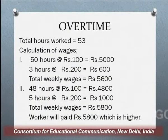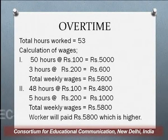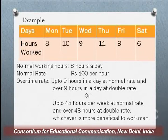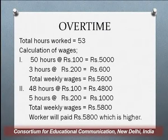The first criteria is up to 9 hours normal rate and beyond 9 hours in a particular day double the rate. In this example, total working hours are 53. On two days — Tuesday (10 hours) and Thursday (11 hours) — the worker exceeds 9 hours. So for Tuesday, 1 hour overtime, and for Thursday, 2 hours overtime. For 50 hours at 100 rupees that comes to 5000, and for 3 overtime hours at 200 rupees that is 600. Total weekly salary: 5600 rupees.